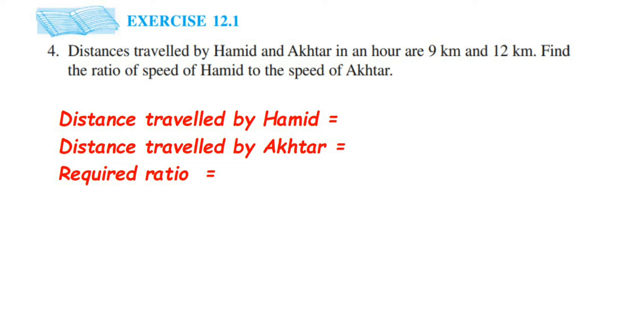Hey everyone, here's a question from Exercise 12.1, Chapter Ratio and Proportion of Class 6. This is the fourth question: Distances travelled by Hamid and Akhtar in an hour are 9 km and 12 km. Find the ratio of